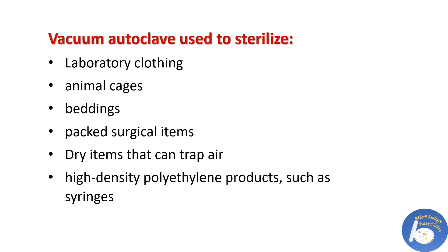In the vacuum autoclave or pre-vacuum autoclave, a vacuum pump removes all the air present in the chamber, and generated steam then fills the chamber. This type is much more efficient than the gravity displacement autoclave, as it allows steam to penetrate and sterilize hard-to-reach areas that would normally be occupied by ambient air. It is used to sterilize laboratory clothing, animal cages, bedding, packaged surgical items, dry items that can trap air, and high-density polyethylene products such as syringes.